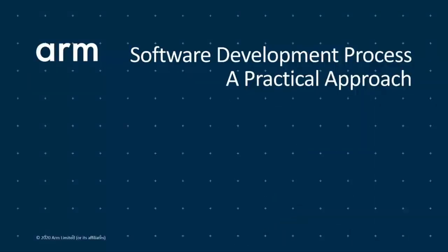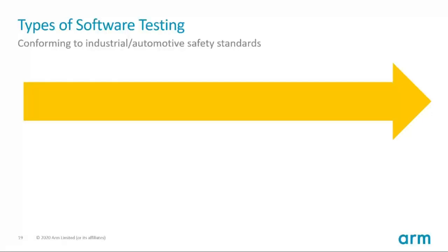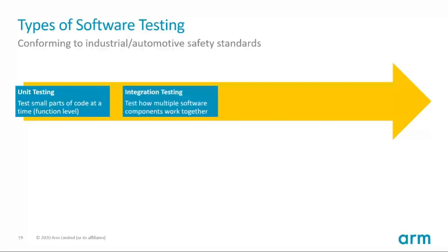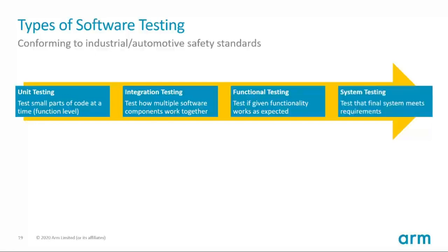I now show you how you can apply all of this in your application development so that you can get your safety certificate faster. What different types of software testing are required during the design phase? Small parts of the code are tested on a functional level during unit tests. As you put these small parts together you start to test the integration, which verifies the correct behavior of the components working together. Next you apply functional testing to see if the overall functionality works as specified. The final system tests check if all requirements are met.